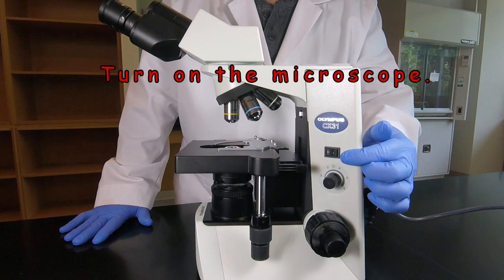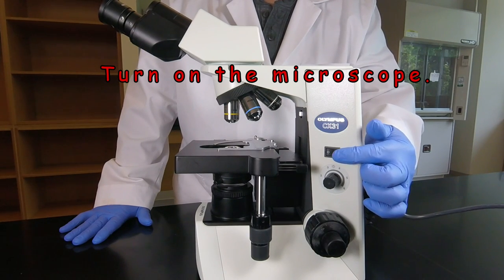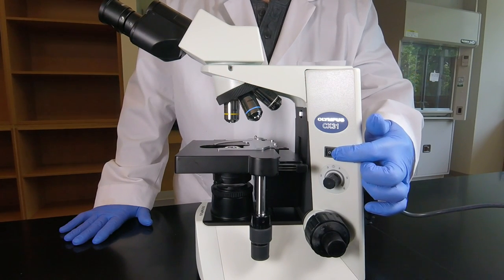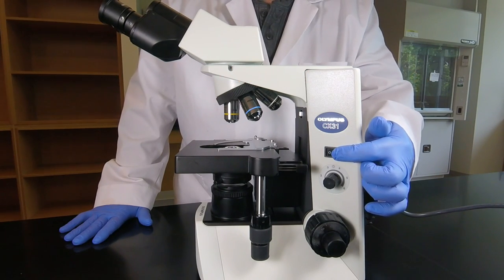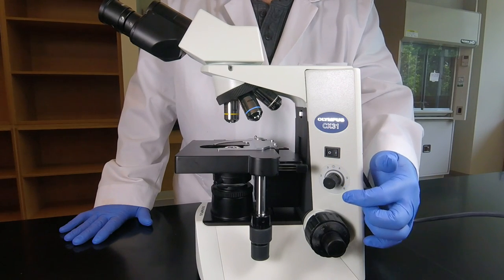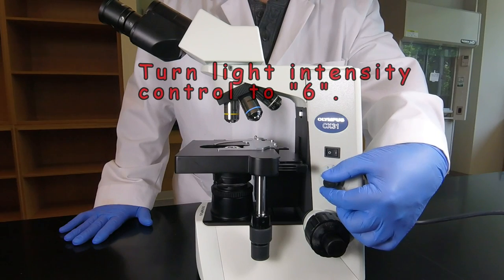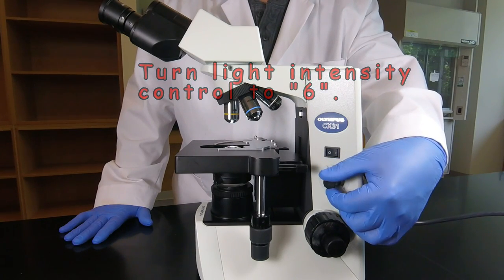And to turn it on, we have an on-off switch right here. So if you depress that, that will turn the light on. And then once the light is turned on, we're going to go back to our light intensity control dial. And we're going to slowly turn that all the way up to six, as high as it'll go.